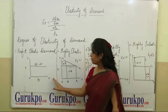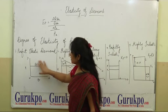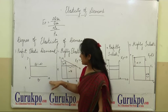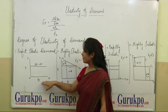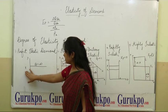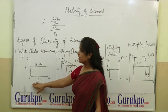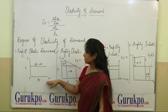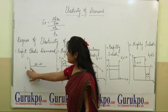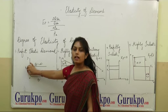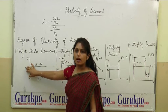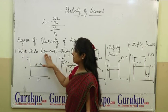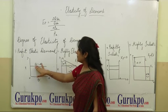What is perfectly elastic demand? As you can see in the diagram, the y-axis represents price and the x-axis represents quantity. The demand curve is horizontal, parallel to the x-axis. This means that a slight change or no change in price leads to a drastic change in quantity demanded. That is perfectly elastic demand, and it is denoted by Ep equal to infinity.